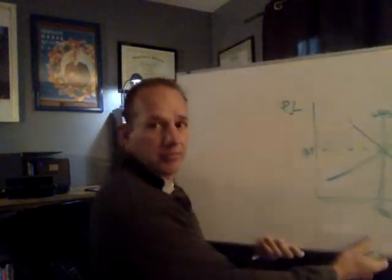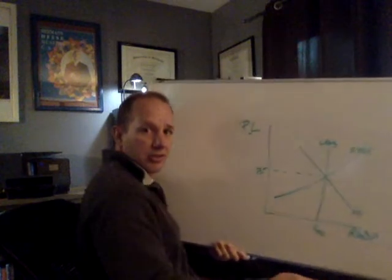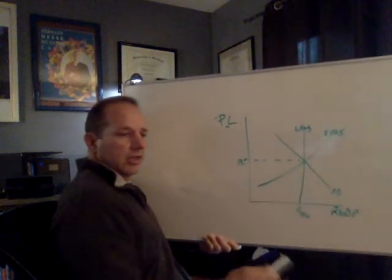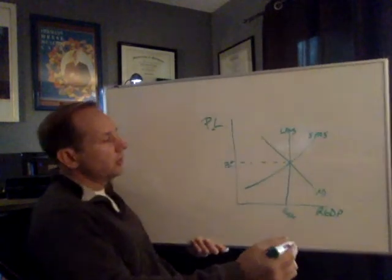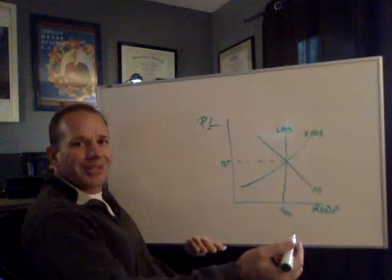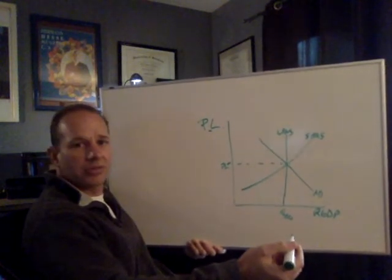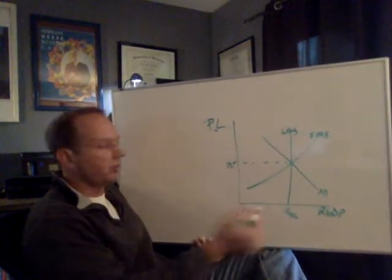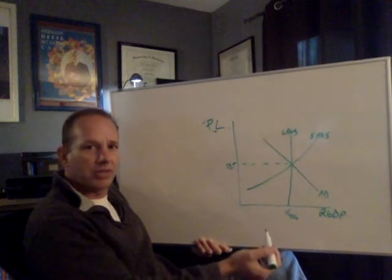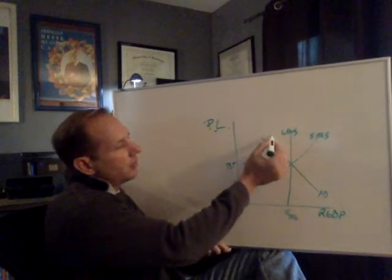Let's dig into this more broadly and sketch this result in the aggregate supply/aggregate demand model. I've drawn the model in advance. Mary Ann has more money, so her buying power is going to increase in this seven-person economy. When one person has more buying power, consumption is going to rise. Consumption, investment, government expenditures, and net exports are the determinants of aggregate demand. Since we have a closed economy, exports and imports aren't an issue — this will increase aggregate demand.